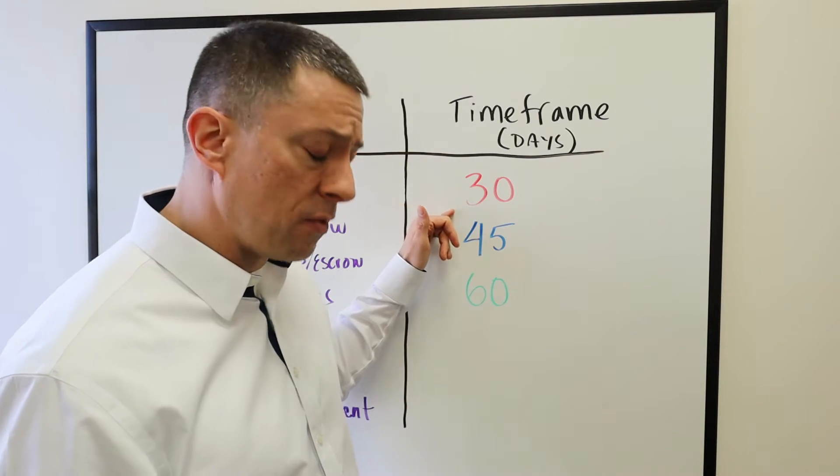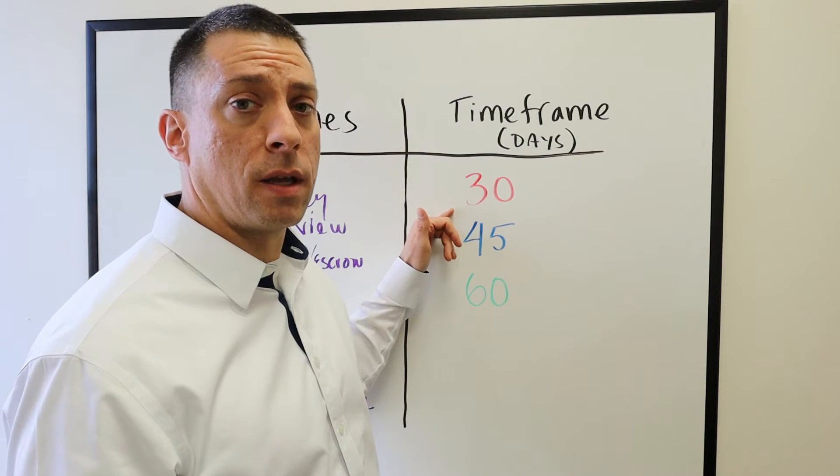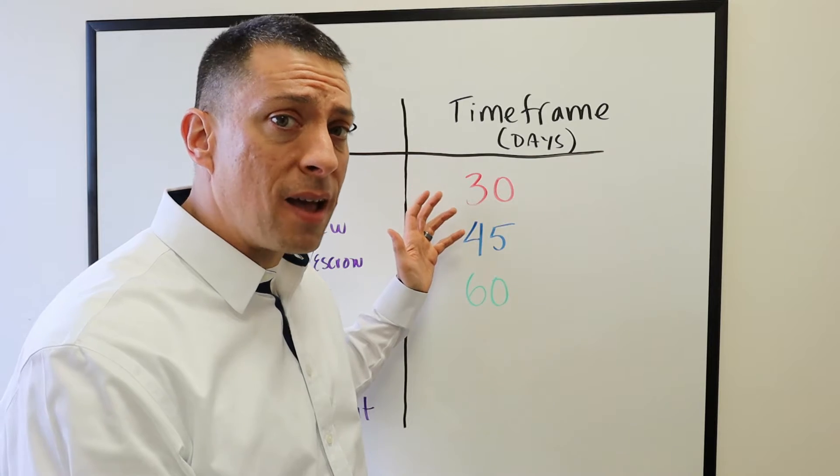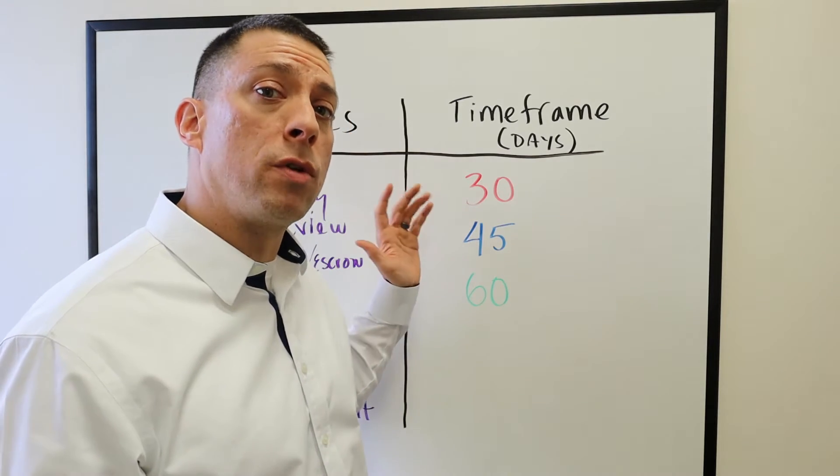I've never seen a lender who couldn't accommodate 45 or 60 days. 30 is a timeframe where you definitely want to make sure that your lender can do it in 30 days. There are a couple of reasons why they may or may not, but you definitely need to check with them. Most good lenders can do a 30-day closing.